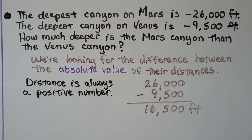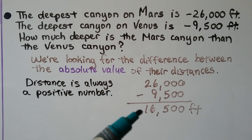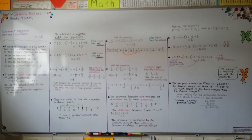The deepest canyon on Mars is negative 26,000 feet — it's 26,000 feet below the surface. The deepest canyon on Venus is negative 9,500 feet. So how much deeper is the Mars canyon than the Venus canyon? We're looking for the difference between the absolute values of their distances. Distance is always a positive number, so we find the difference between 26,000 and 9,500, and that's 16,500 feet — a positive number because it's a distance. So to subtract a negative rational number, we add the opposite, and remember, distances are always positive.